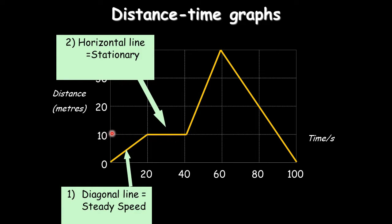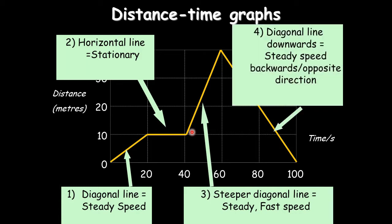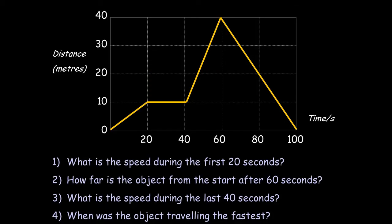The second section is a horizontal line. All horizontal lines mean it stays at the same distance — here it's staying at 10 meters, so it's stationary. The next section has a much steeper line than the first, meaning a much faster speed. The last diagonal line going backwards means it returns to zero — it goes back to its original position.